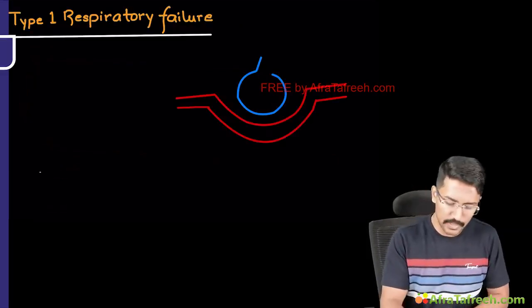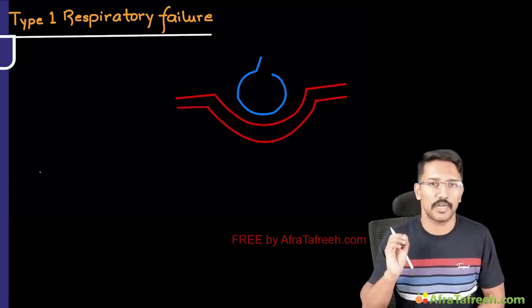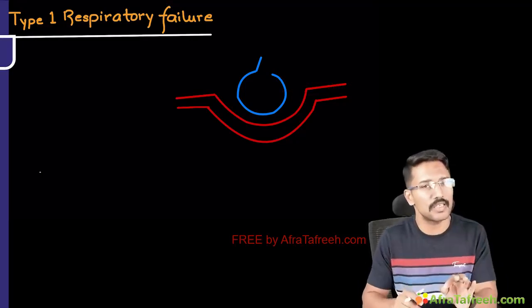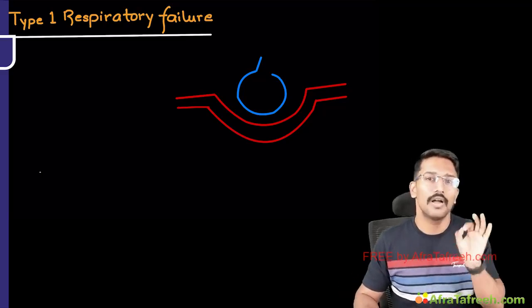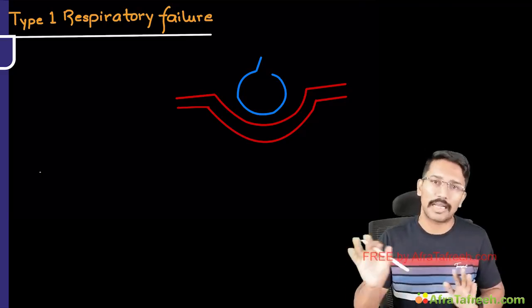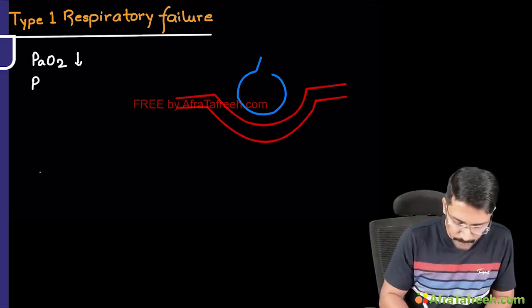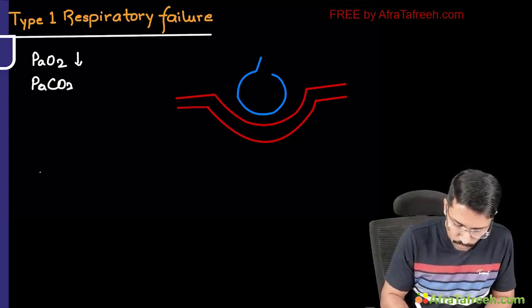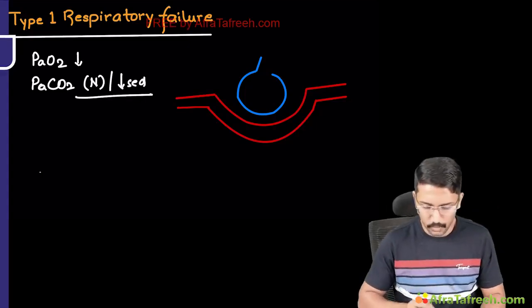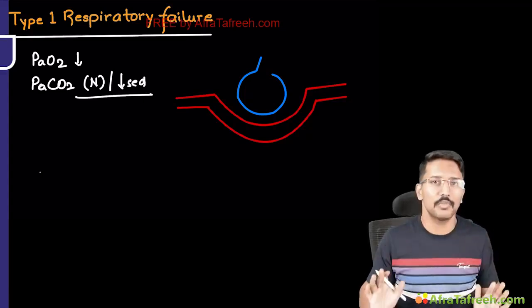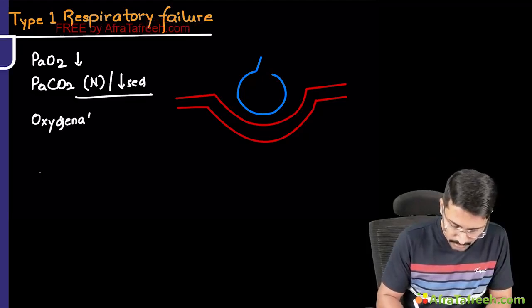Coming to type 1 respiratory failure — it is called hypoxic respiratory failure and it is a pure hypoxic respiratory failure. Hypoxia is present, blood oxygen levels are decreased, PO2 is reduced, SpO2 is reduced, but there is no hypercapnia. If hypercapnia comes into picture, that becomes type 2 respiratory failure. So in these patients PaO2 is decreased, but PaCO2 can be either normal or decreased — it cannot be increased. This is primarily a defect of oxygenation.